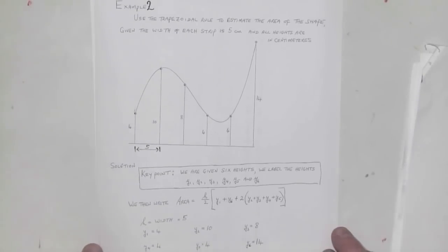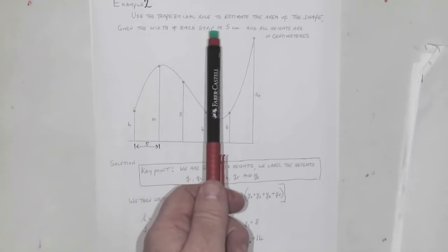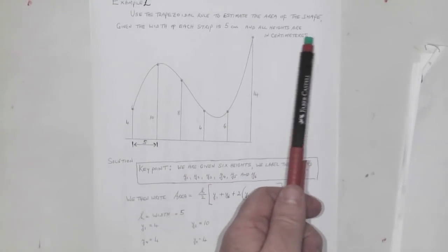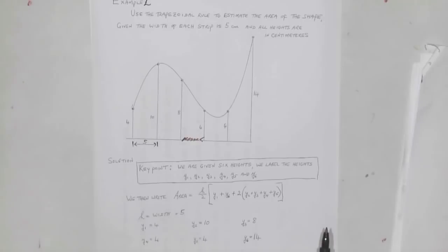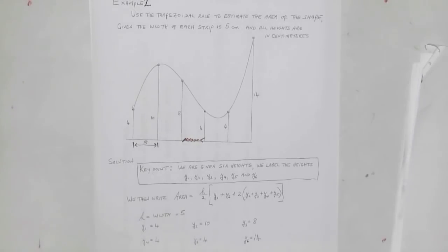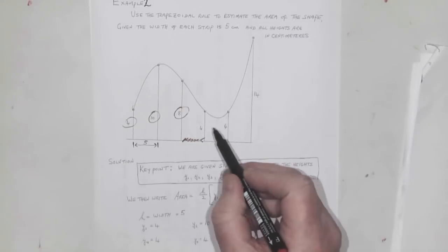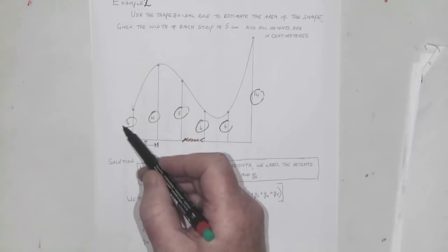Now for a straightforward example: use the trapezoidal rule to estimate the area of the shape, given the width of each strip is 5 centimeters and all heights are in centimeters. Each strip is 5. Count the heights: y1, y2, y3, y4, y5, y6—there are six heights.